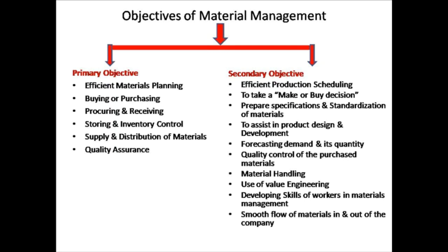Quality control is very, very important because we don't know where things are coming from. When materials arrive, there is a possibility of adulteration, and only when a materials management system is in place can we find out whether the material is adulterated or not. The next point is material handling — how and when to receive and store materials should be clear before even ordering. Then, use of value engineering and developing skills of workers, and finally, smooth flow of materials in and out of the company.